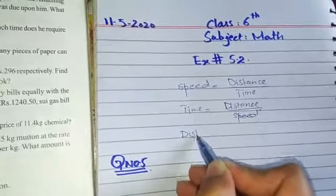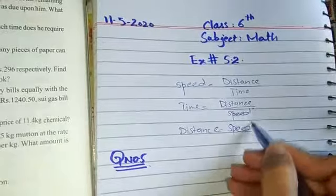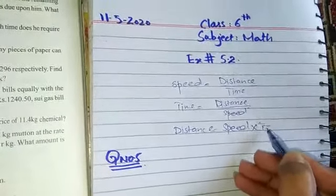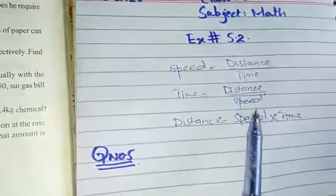Similarly, if we have to find the distance, the formula of distance is speed multiplied by time. These are some basic formulas from speed formula.